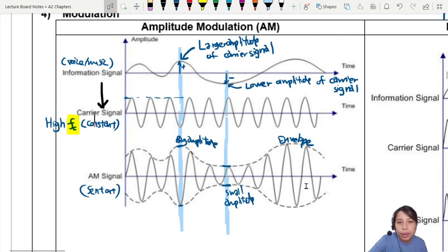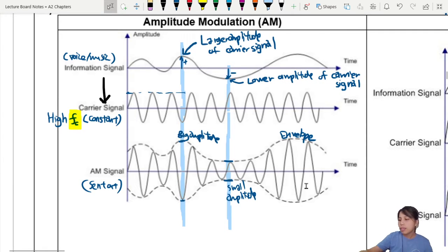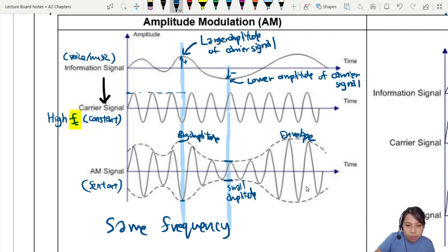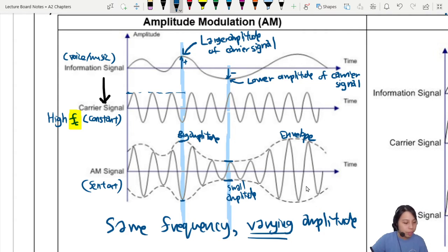This is what we call an envelope, because you see the amplitude is different. And this is how we encode the information signal into a carrier signal which can be identified as the transmitter. So you need to know that in conclusion, you have the same frequency. There's no change in frequency in your carrier signal, but you are varying the amplitude to send the information that you want.